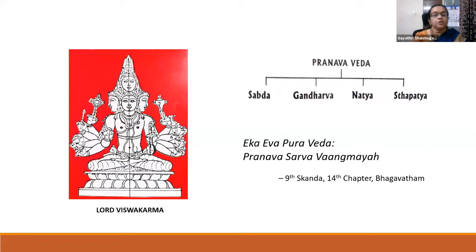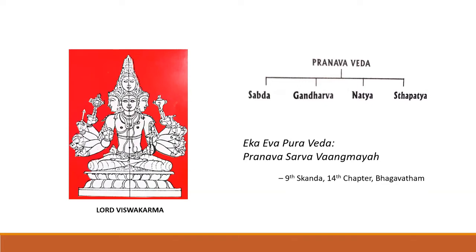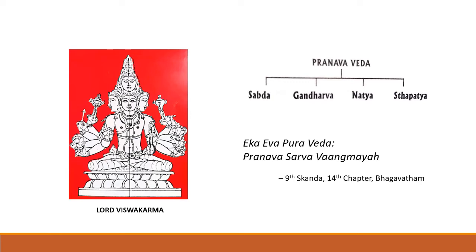The five faces are highly significant — not only for their beauty, but for their deeper meaning. They represent the five-fold Vedic tradition followed by the Vishwakarmas, who are the aboriginal creative tribes of India, pre-Vedic in origin. The Pranavaveda, the foremost Veda, is represented by the foremost face of Vishwakarma. From the Pranavaveda emanated the other four Vedas: Shabda, Gandharva, Natya, and Stapathya. Shabda represents poetry, Gandharva represents music, Natya represents dance, and Stapathya represents architecture and sculpture.